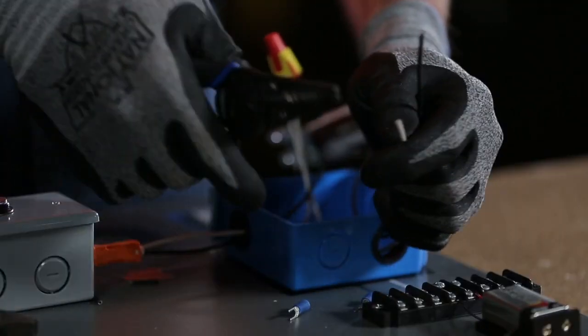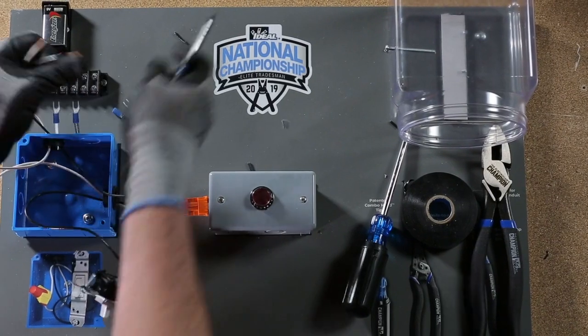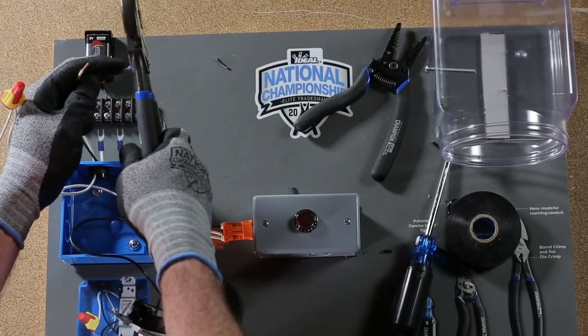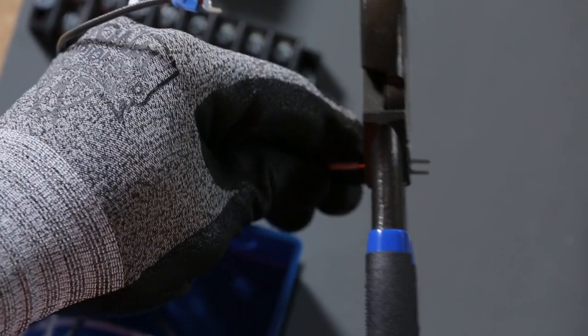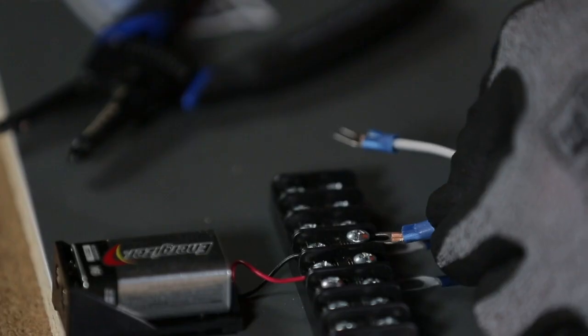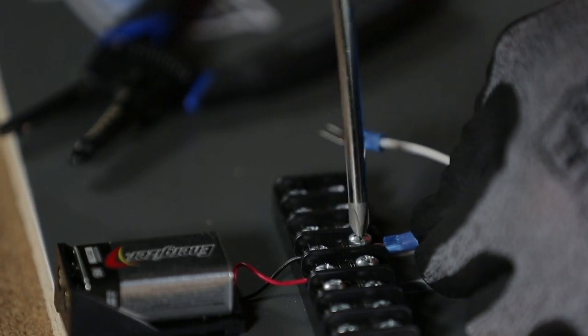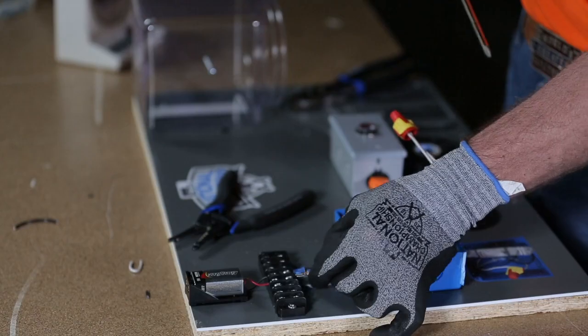Strip both ends of the wire closest to the terminal strip with the T-Stripper. Using the crimping die in your Linesman pliers, crimp the spade terminals on both conductors and connect to the terminal strip, paying attention to the polarity of your wires.